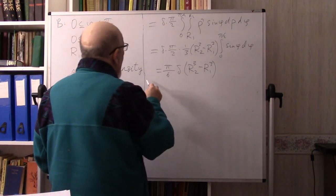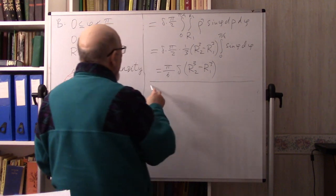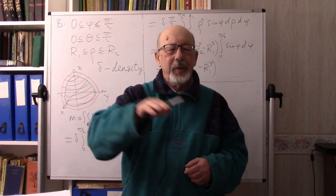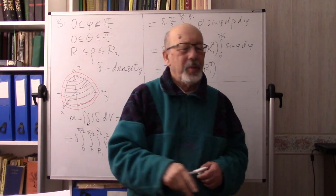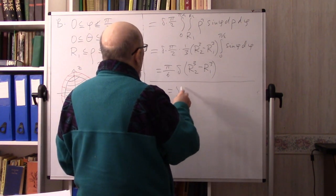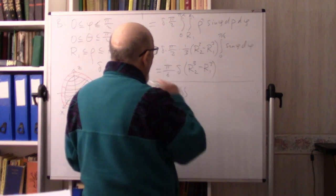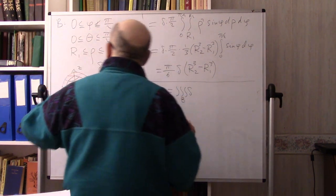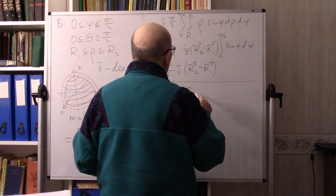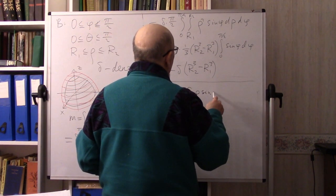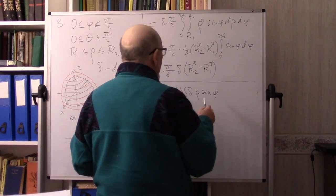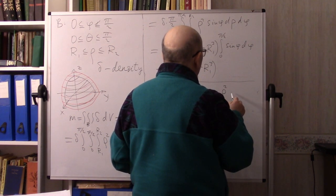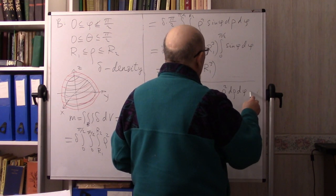Now we need to find the moment M_xy. To find the z-coordinate of the center of mass we need the moment with respect to the xy-plane divided by the mass. M_xy equals the integral over B of δ·z·dV. Since z = ρ cos φ, and dV = ρ² sin φ dρ dφ dθ, we get δ times the integral involving ρ³ sin φ cos φ dρ dφ dθ.